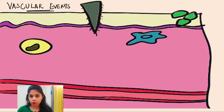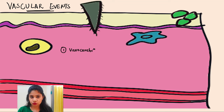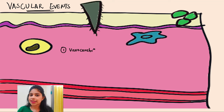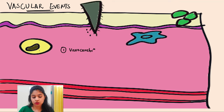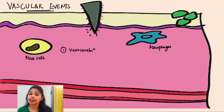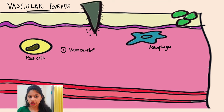Under vascular events, there are three major components. First is vasoconstriction — with any physical injury, a blood clot must form, so blood vessels constrict to facilitate clotting. Second, with physical injury or microbial attack, foreign bodies are recognized by cells such as mast cells, macrophages, and Langerhans cells, which have receptors that help in this recognition and then release certain chemical agents.